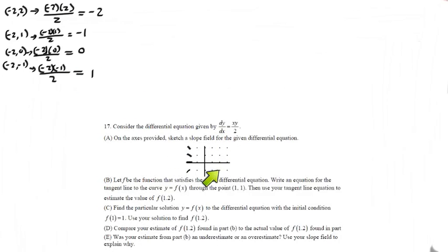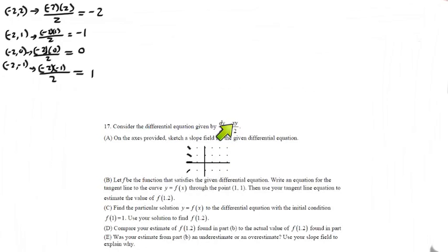For the rest of them I'm going to do it in my head. I'm looking for patterns here. Every single one of these points on the x-axis has a 0 for the y, which means we're going to have a 0 on the top. And 0 divided by 2 is going to be 0. So all of these points right here have a horizontal baby tangent line.